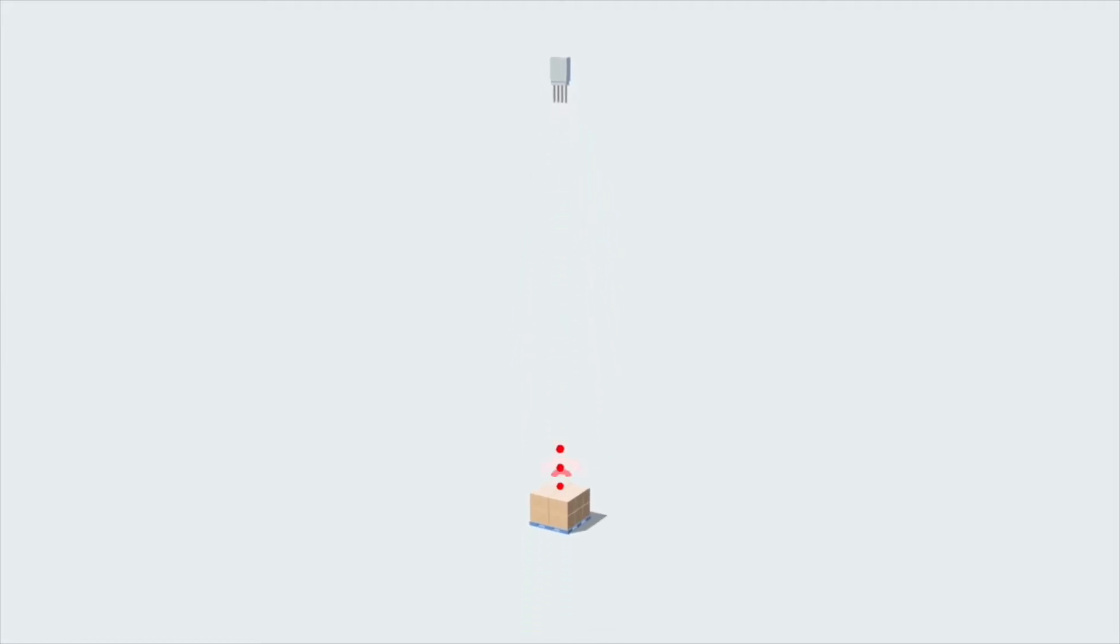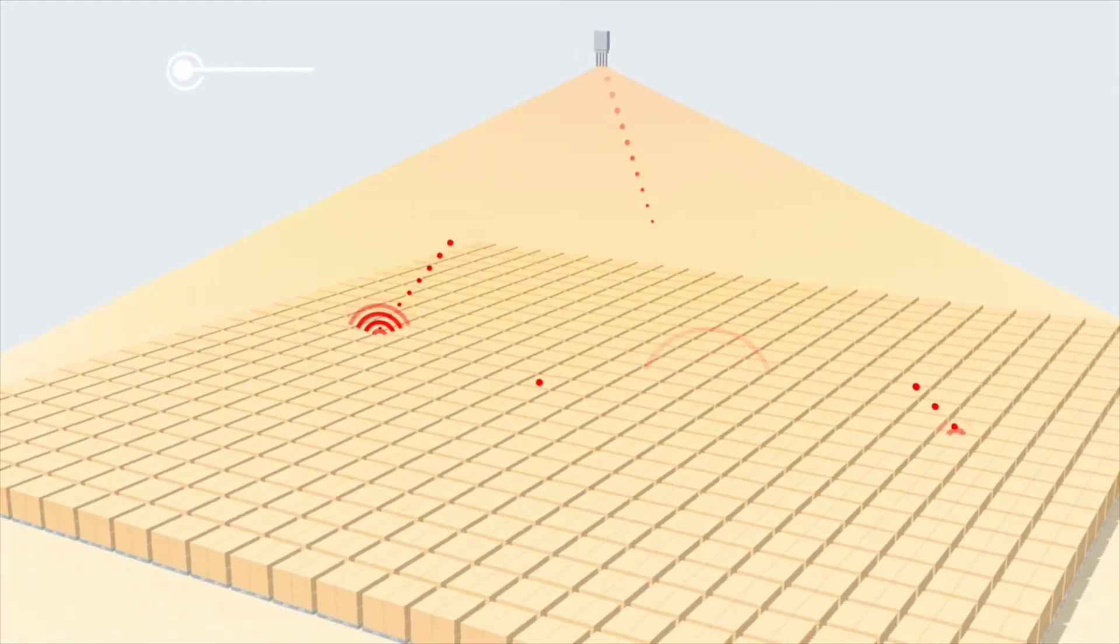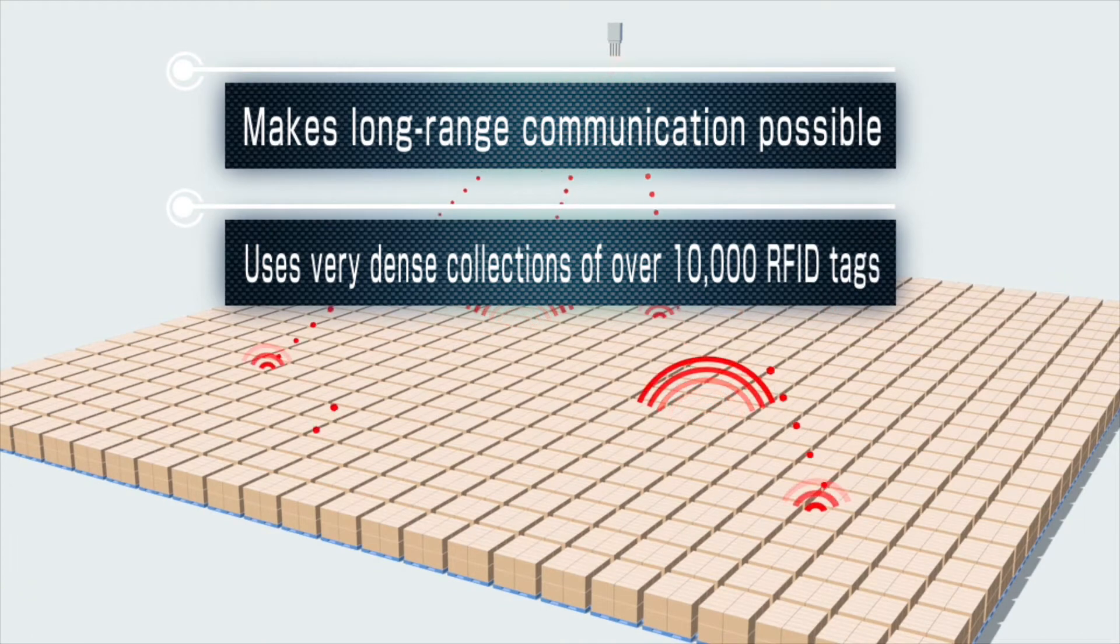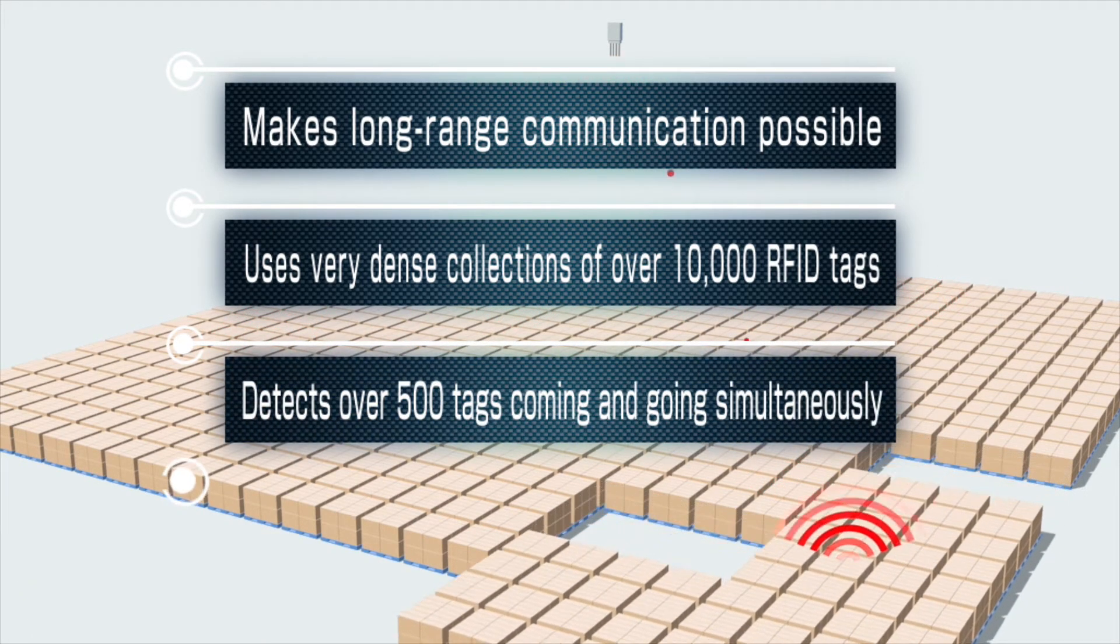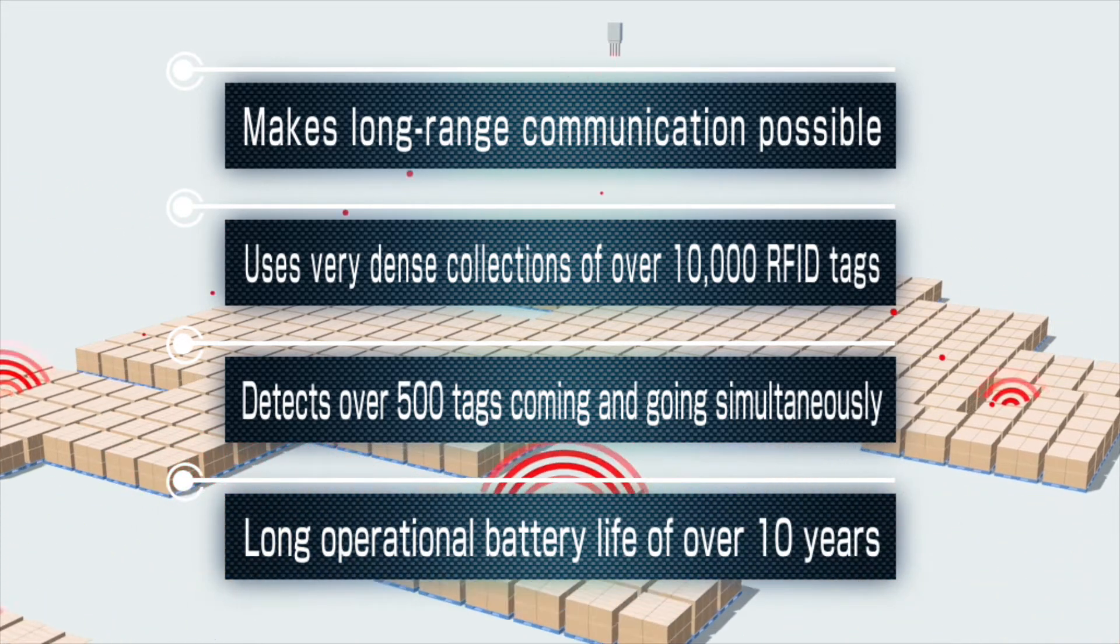This technology uses active RFID, which can communicate at greater distances than the passive RFID that is often used in physical distribution. It can detect dense collections of tags, over 10,000 per cell, as well as the simultaneous movement of over 500 tags, and it has a long operational battery life of over 10 years.